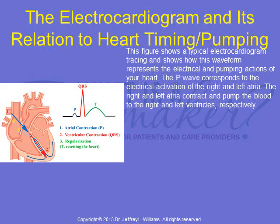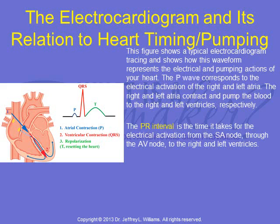The P wave corresponds to the electrical activation of the right and left atria. The right and left atria contract and pump the blood to the right and left ventricles, respectively. The PR interval is the time it takes for the electrical activation from the SA node through the AV node to the right and left ventricles.